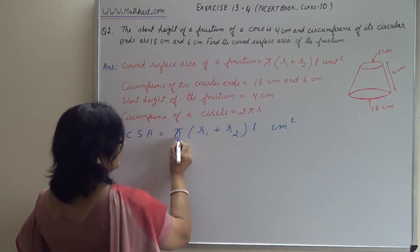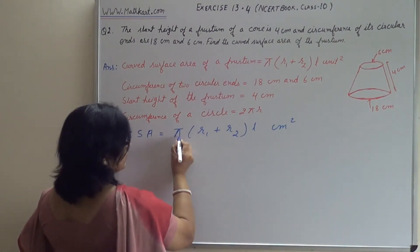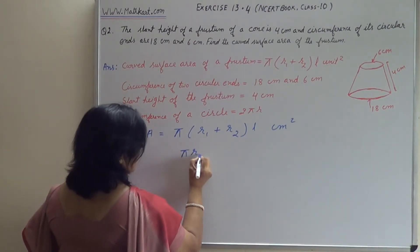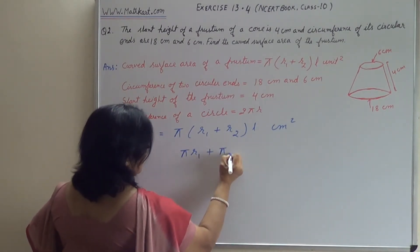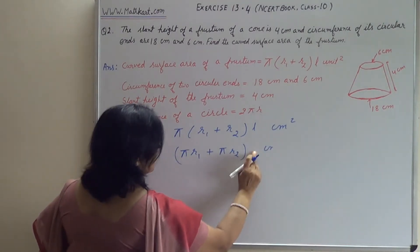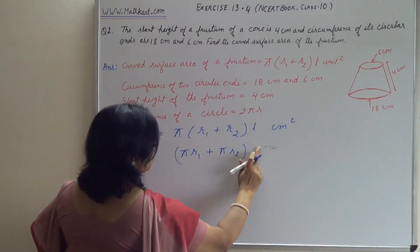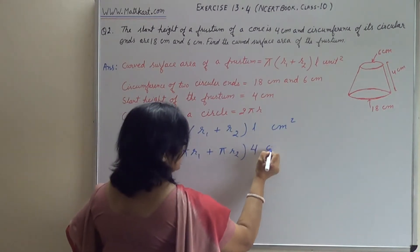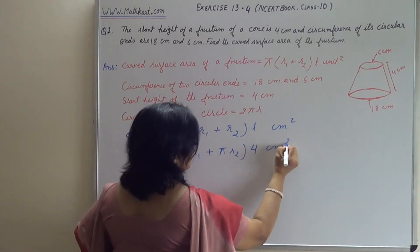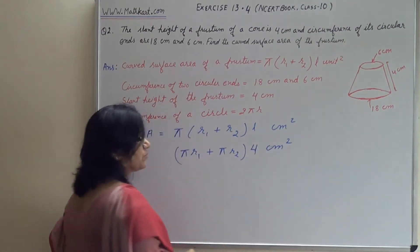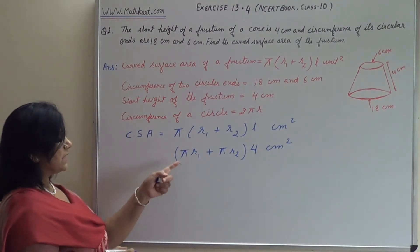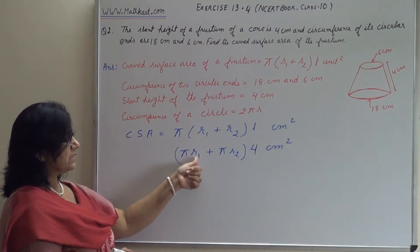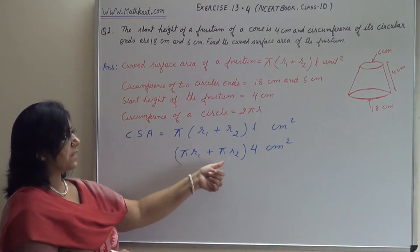If we multiply this out, π distributes across both terms, giving us (πr1 + πr2) × l, where l = 4. So we write l = 4 cm. Now we see what we have: πr1 + πr2.